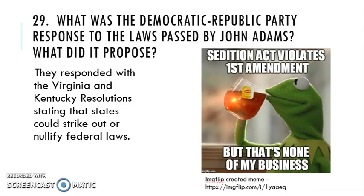The Democrat-Republican Party's response was the Virginia-Kentucky Resolutions. Thomas Jefferson and James Madison wrote this, basically stating that states can strike out, nullify, void, and cancel any federal law they don't like. It introduces the concept of nullification, which will pop up a couple more times in American History 1 — in 1832 with a tariff, and in the election of 1860 with Abraham Lincoln.